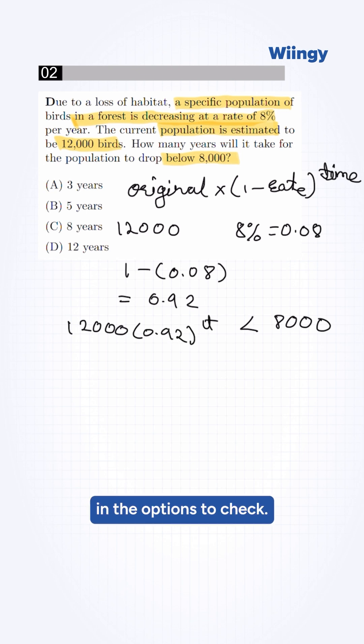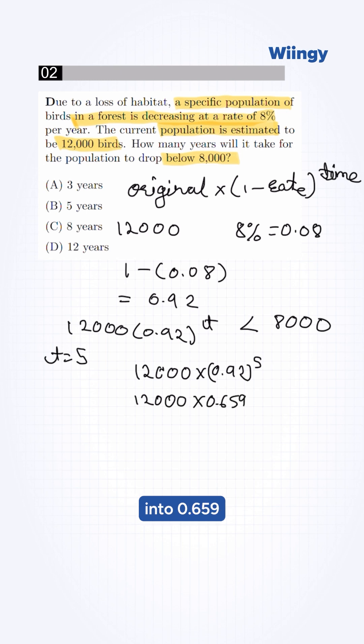Now we plug in the options to check. First we check for t equals 5. 12,000 times 0.92 raised to 5. This is 12,000 times 0.659, which is 7908. Is this less than 8,000? Yes.